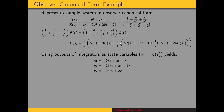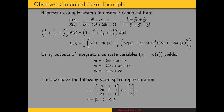X2-dot equals 7R minus 26 times X1 plus X3. And finally, X1-dot, which is C-dot, equals R minus 9 times X1 plus X2. Now we can write the state space representation based on these state equations. We have this left companion matrix for the state matrix, and here is our input matrix with entries 1, 7, and 2. The output is just equal to X1, so the output matrix C is simply [1, 0, 0]. That's the observer canonical form representation.